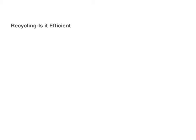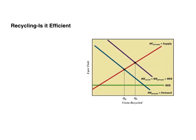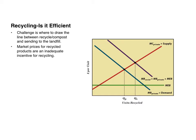That leads to the next question: is recycling efficient? A graph shows units recycled with the private marginal benefit curve and the private marginal cost curve. To get the optimal amount of recycling, society would want more — this is a classic positive externality. Market prices for recycled goods are inadequate incentives for recycling. There needs to be some kind of subsidy to get the MB private up to the MB social, which equals MB private plus MEB — a per-unit benefit subsidy. Market prices do not reflect the social benefits of recycling.